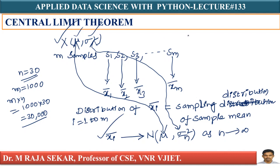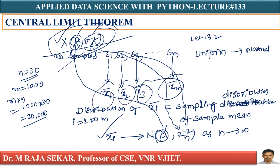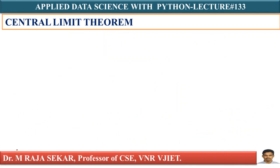Just recall lecture number 132, where I discussed how uniform distribution is converted into normal distribution. There we discussed that the mean is the same — population mean mu equals sample mean mu. But after conversion, the variance is decreased: 2.236 is converted into 1.58. This is the statement of our Central Limit Theorem: any arbitrary distribution with mean mu and variance sigma squared, if you collect samples, calculate sample means, and plot them, that will follow normal distribution with mean mu and variance sigma squared by n.